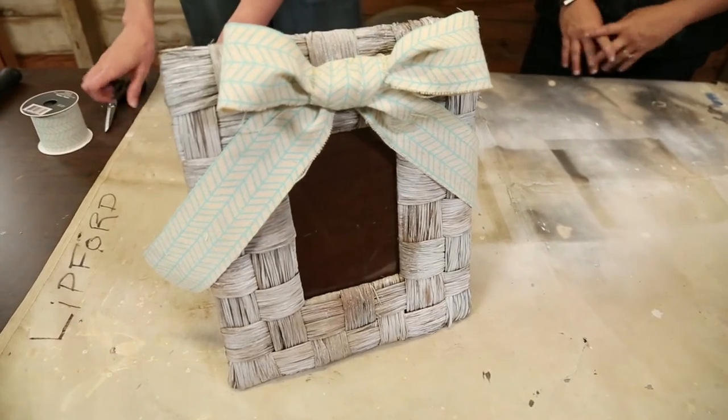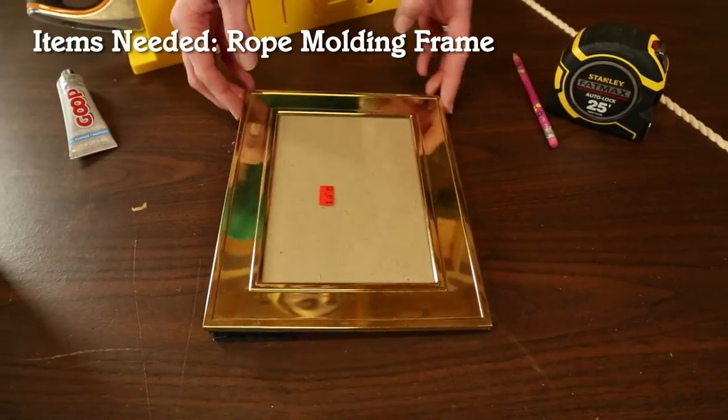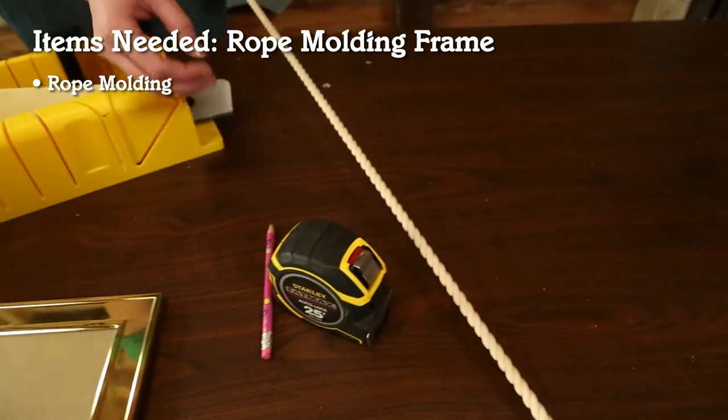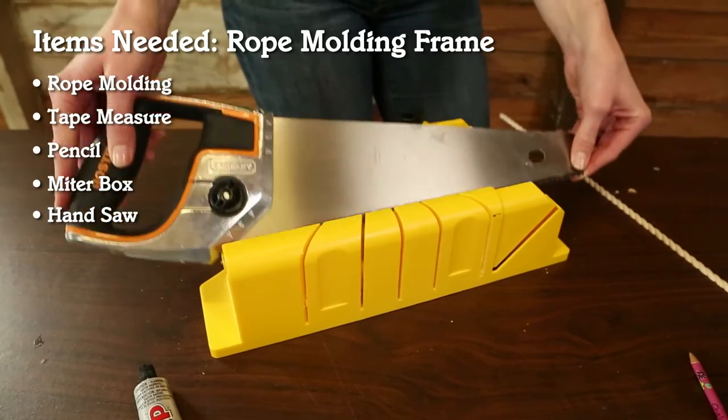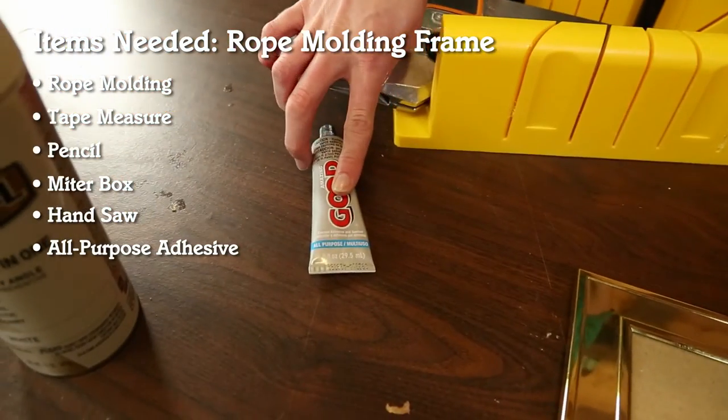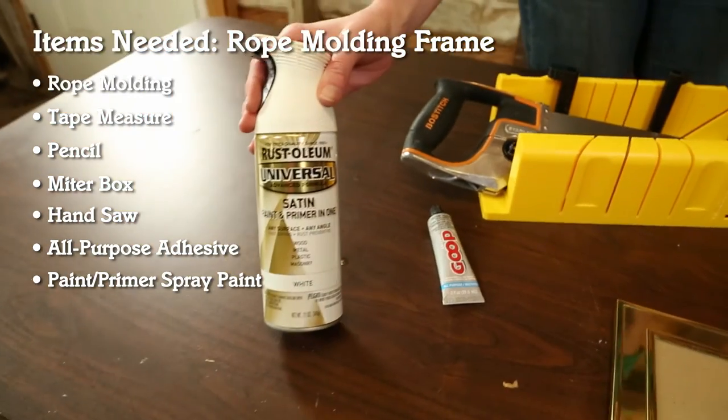Now onto our third and last picture frame. For this frame, we're going to use rope molding, a tape measure and a pencil, and a miter box and a handsaw, all-purpose adhesive for wood and metal. And we'll finish it off with some spray paint.